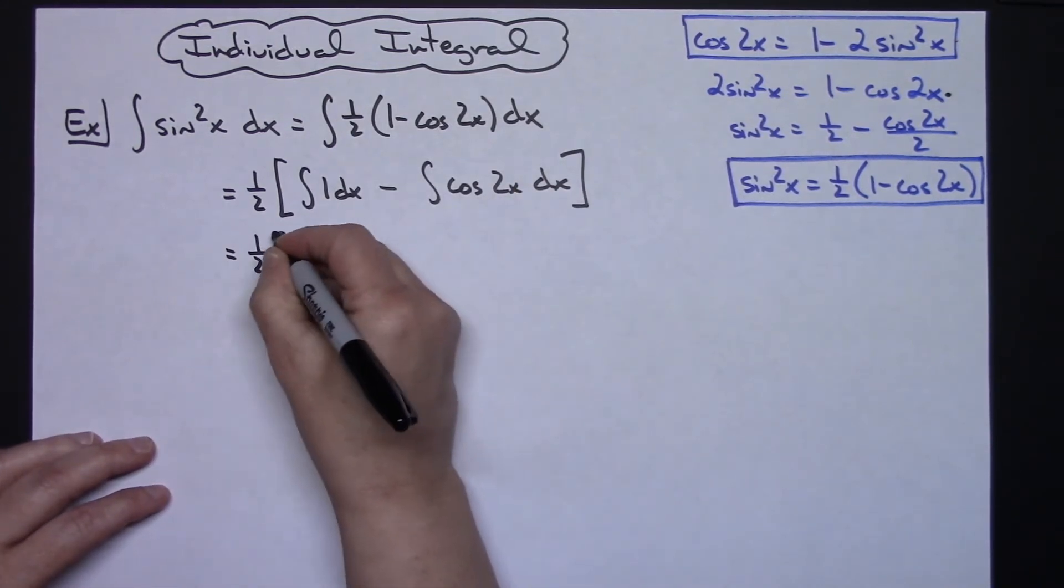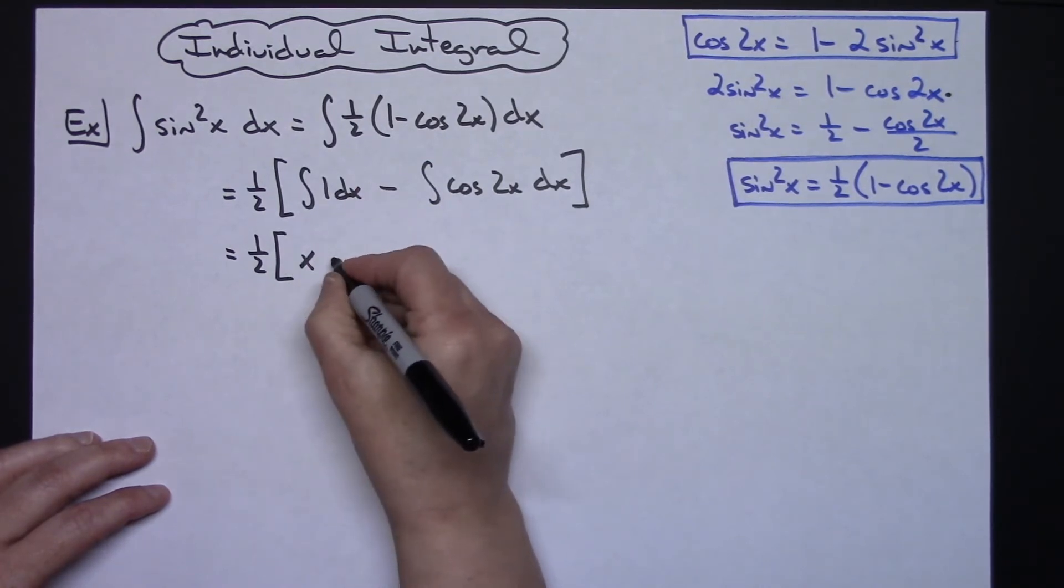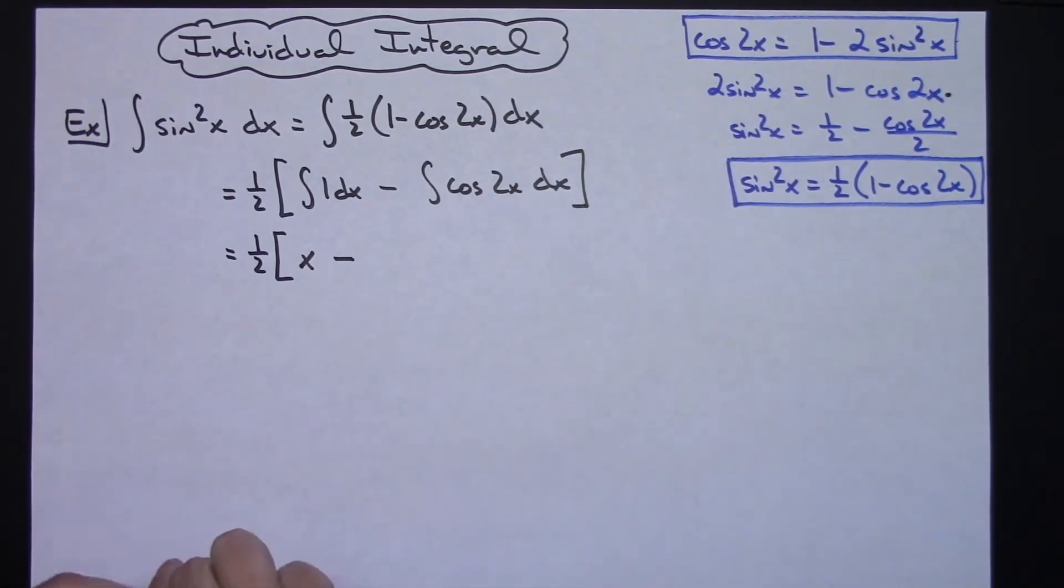So we'll have the 1 half out in front. Integrating 1 with respect to dx, I'll get an x and then it's going to be minus. Now let's take this and go ahead and show our U substitution.